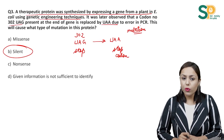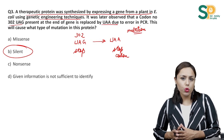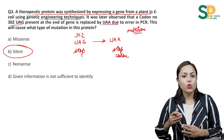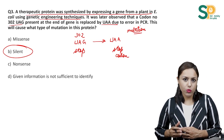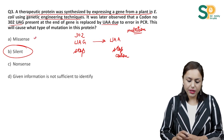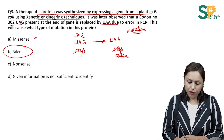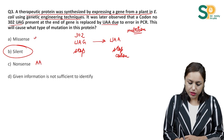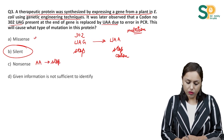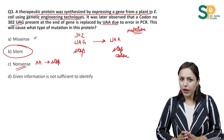If in this case a stop codon is replaced by some other codon which codes for an amino acid, then that will be a missense mutation. If earlier it was an amino acid and later it is a stop codon, then it will be a nonsense mutation.